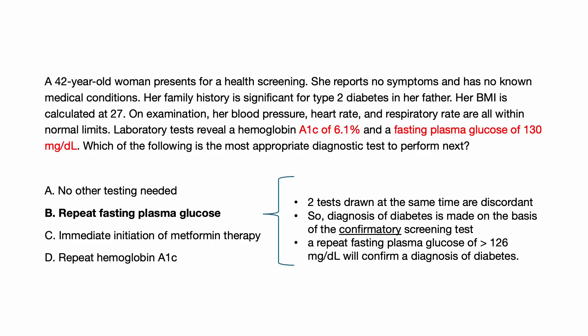The correct answer is B, repeat fasting plasma glucose. A repeat fasting plasma glucose measurement should be performed in this patient to confirm the diagnosis of diabetes. She was appropriately screened for diabetes since she is older than 35 years of age with a BMI of at least 25. Remember, in an asymptomatic patient, diabetes can be diagnosed by two abnormal results based on the following criteria.